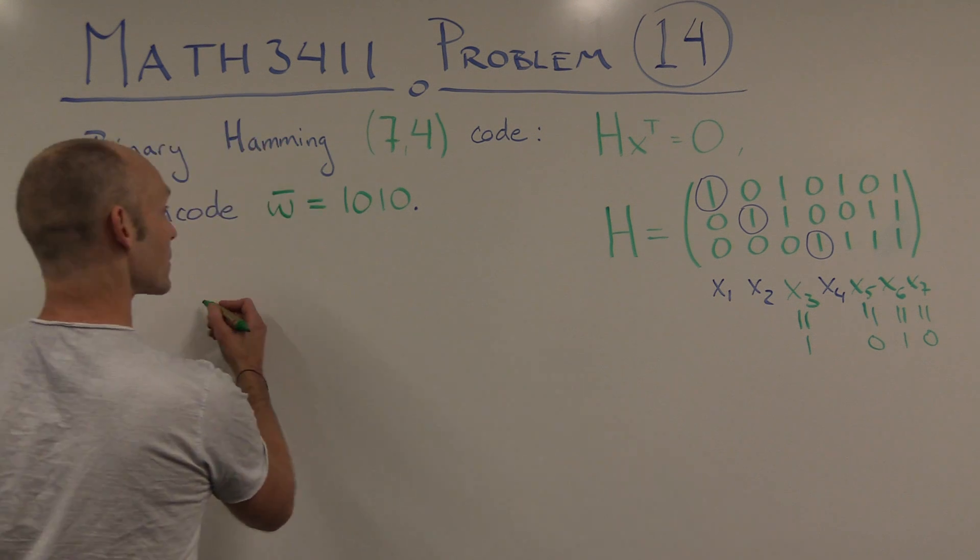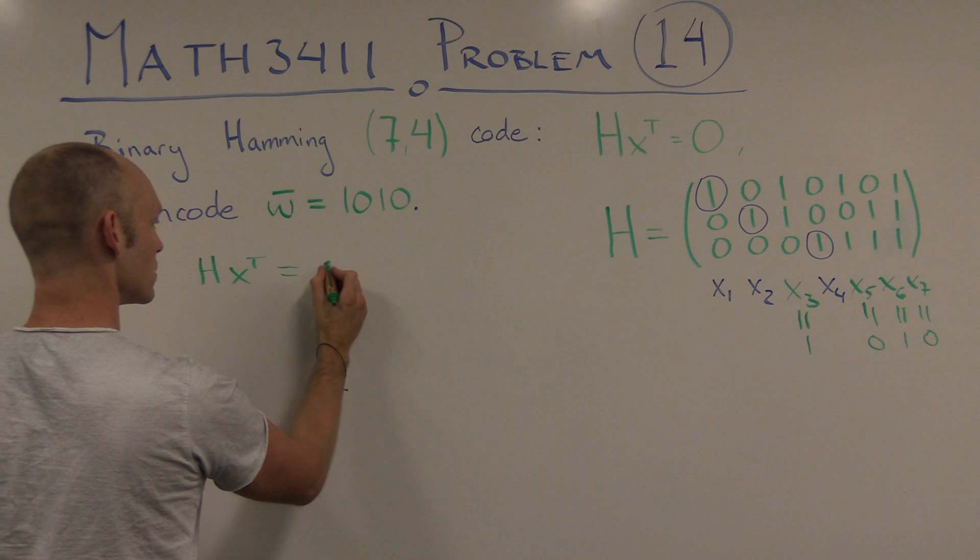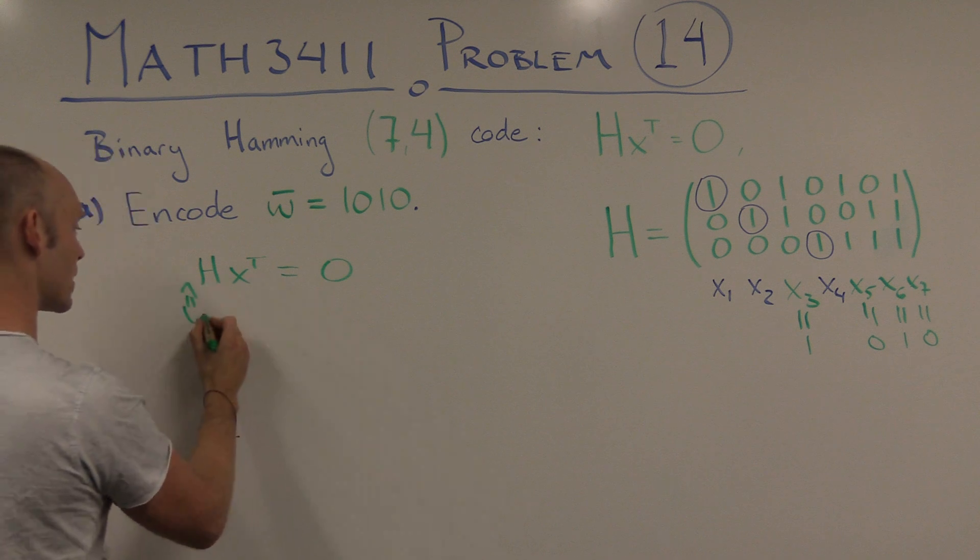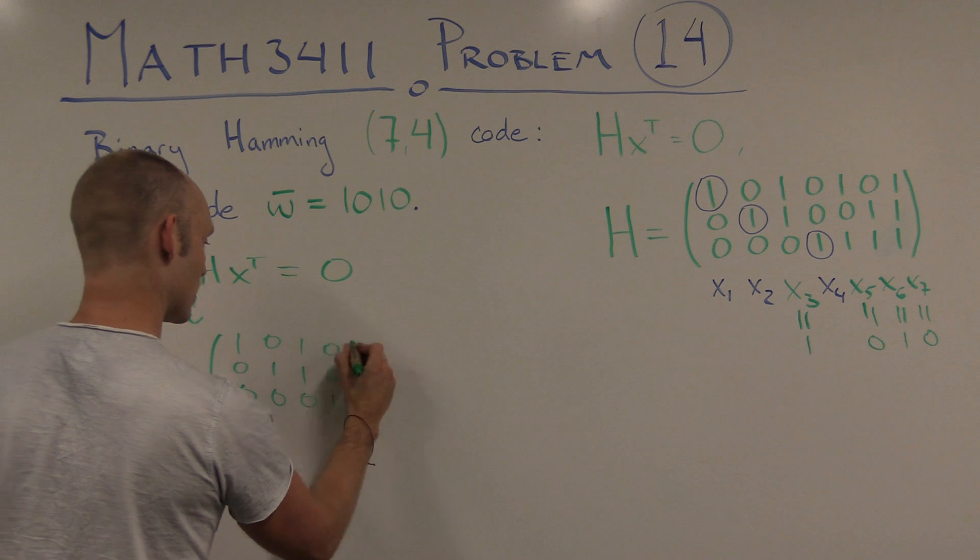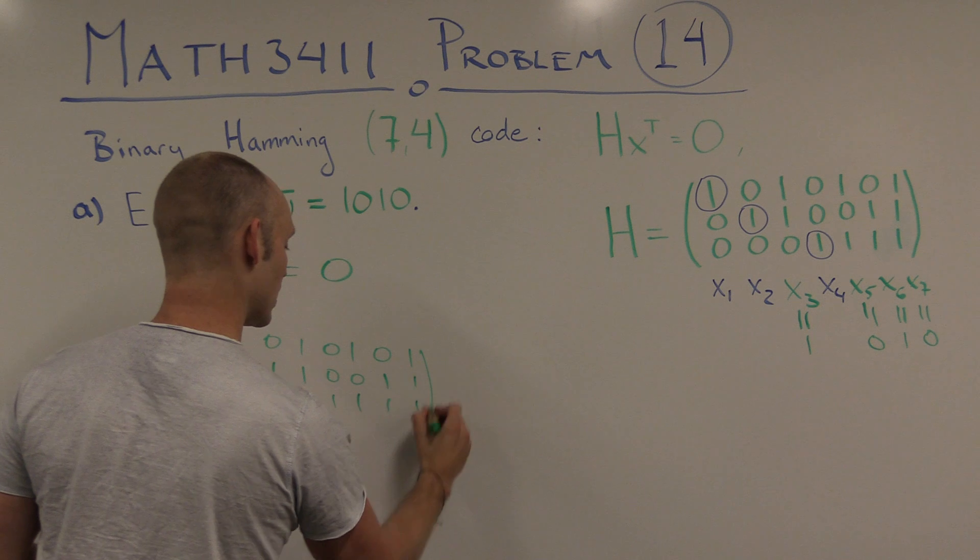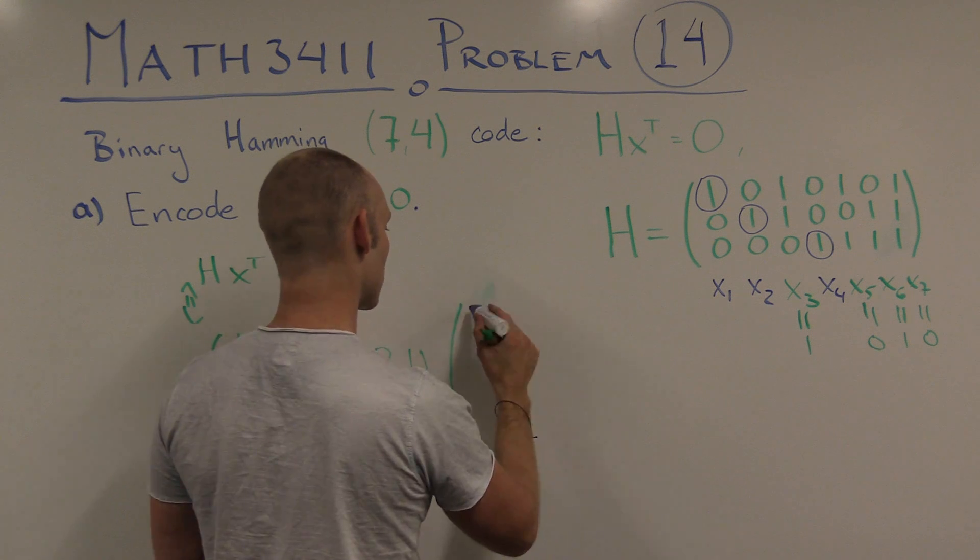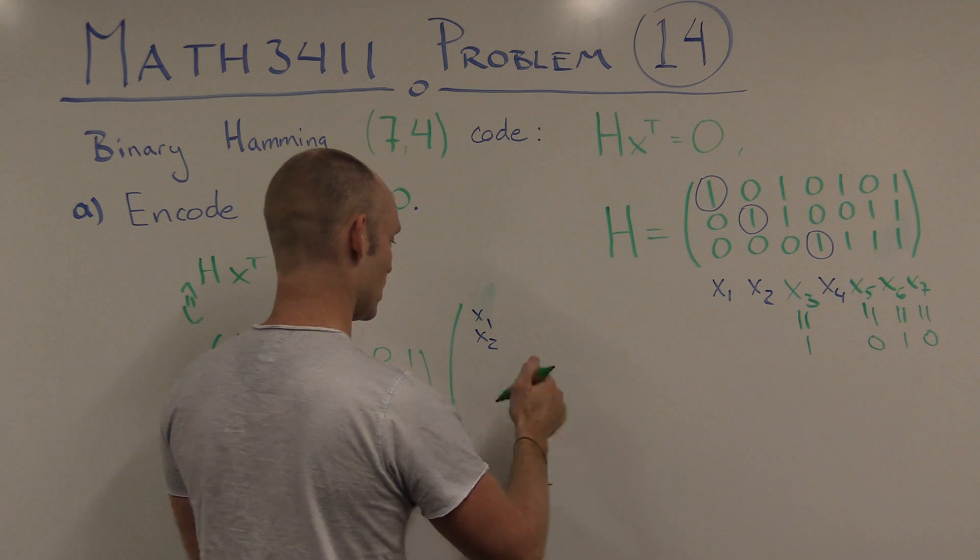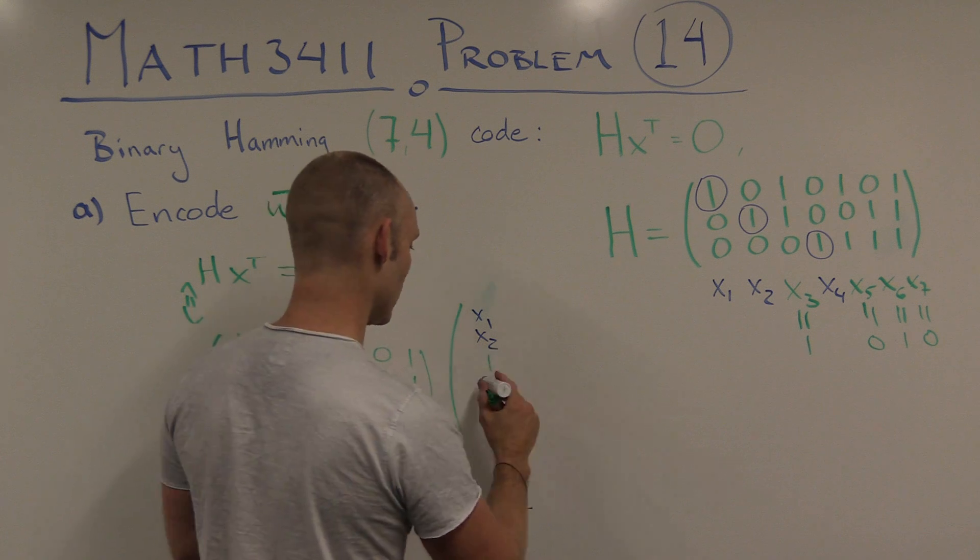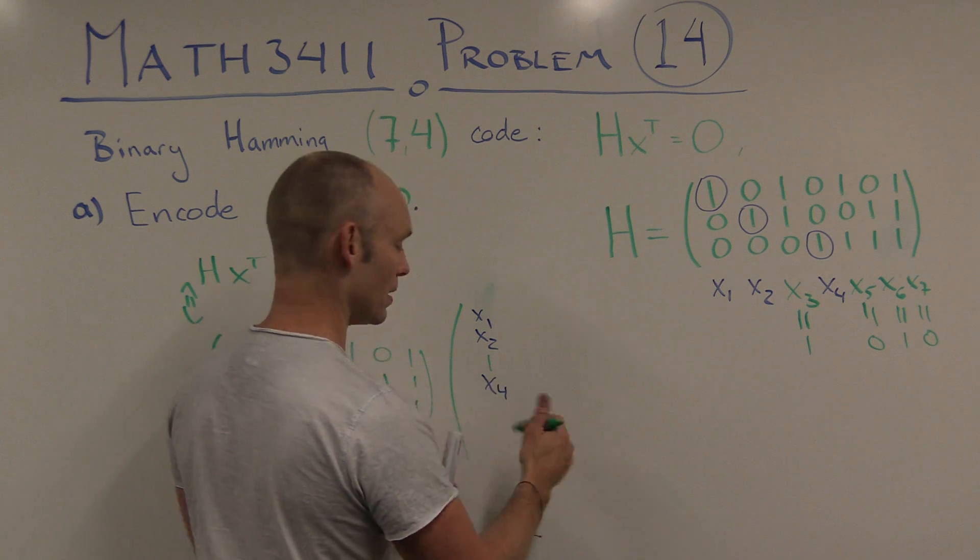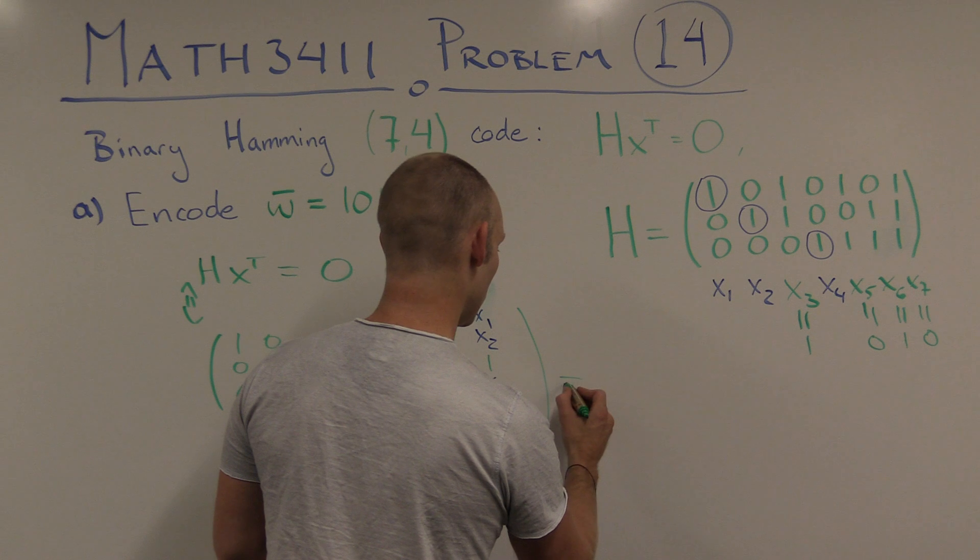Okay, so let's look at this matrix equation and try to find x1, 2, and 4. So let's write the matrix up again. Hx, or Hx transpose is the 0 vector. That's equivalent to saying that we have this matrix here times x, which is x1, x2, x3, which is equal to 1. Then x4, the last of the check bits. And then x5, 6, and 7, which was 0, 1, 0.